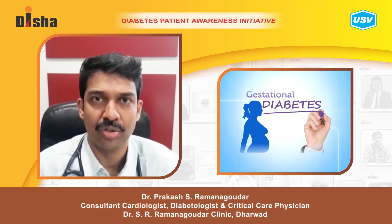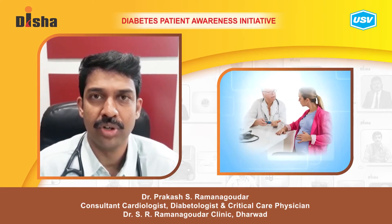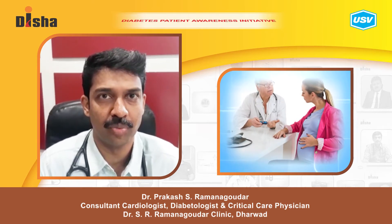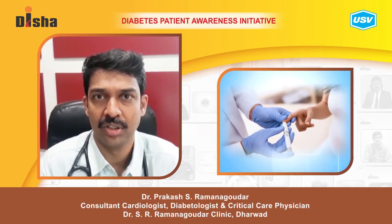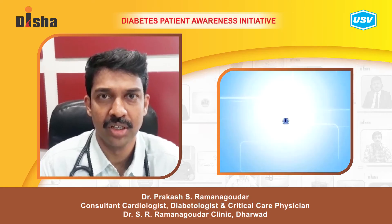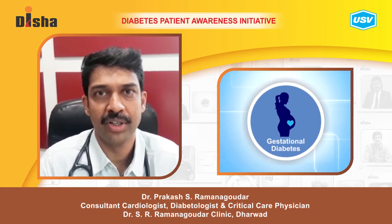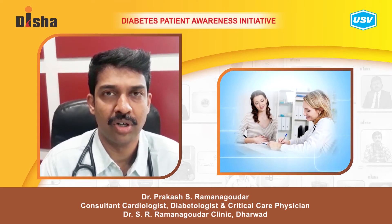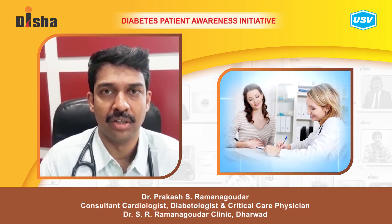Regarding diabetes and pregnancy, there are two categories of pregnant mothers. The first are women who are already diabetic before pregnancy and need to plan their pregnancy well in advance so their sugars are well controlled. The second category are pregnant women who become diabetic once pregnant — this is called gestational diabetes.